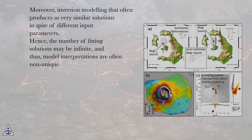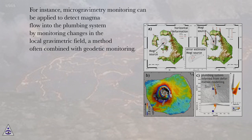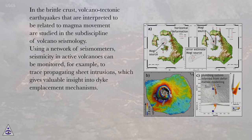Geophysical methods are also frequently applied to study active volcanoes in order to locate magma storage levels and to infer processes related to magma movement. For instance, microgravimetry monitoring can be applied to detect magma flow into the plumbing system by monitoring changes in the local gravimetric field, a method often combined with geodetic monitoring. In the brittle crust, volcano-tectonic earthquakes interpreted to be related to magma movement are studied in the subdiscipline of volcano seismology. Using a network of seismometers, seismicity in active volcanoes can be monitored — for example, to trace propagating sheet intrusions, which gives valuable insight into dike emplacement mechanisms.